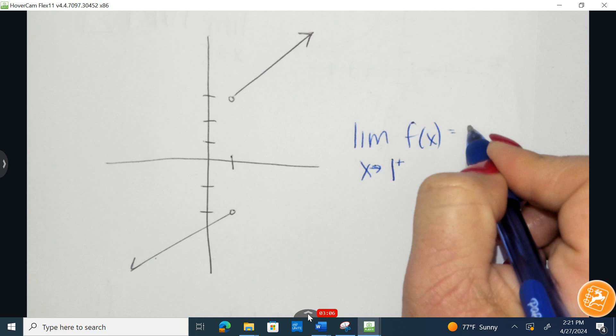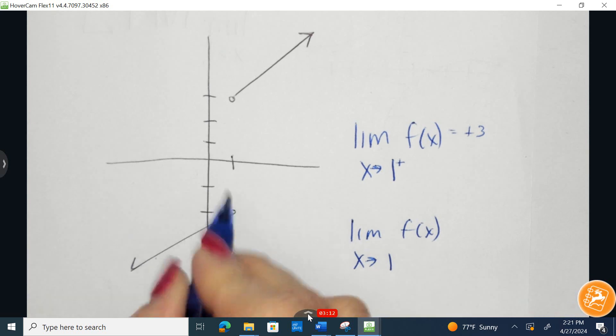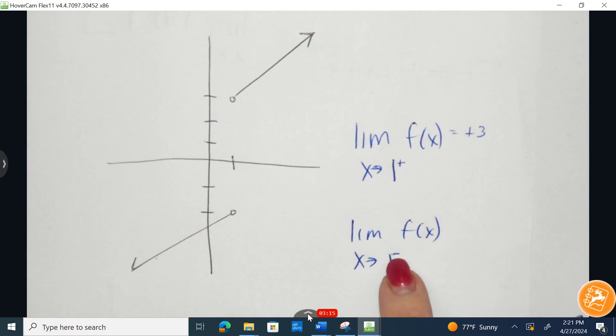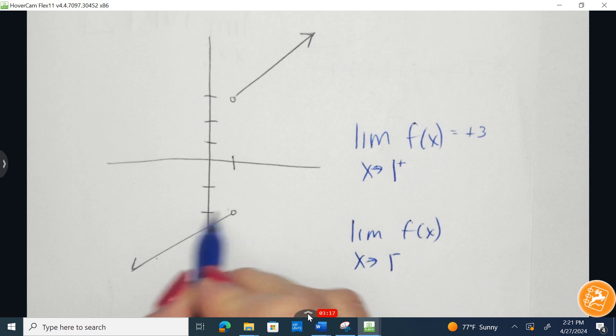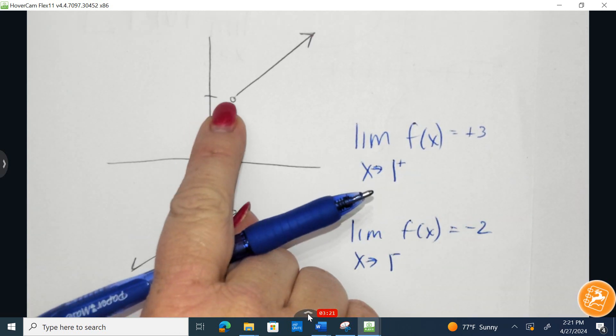it would be approaching positive 3. But if I change it and said the limit of f of x as x approaches 1 from the left-hand side, left-hand side, right-hand side, then it would be approaching an output value of negative 2. So the y value would be approaching 3,